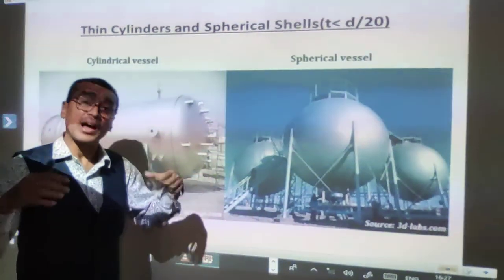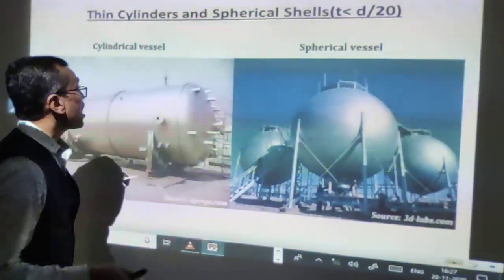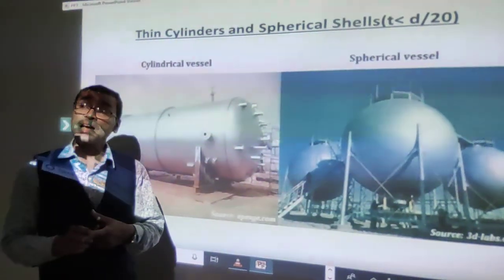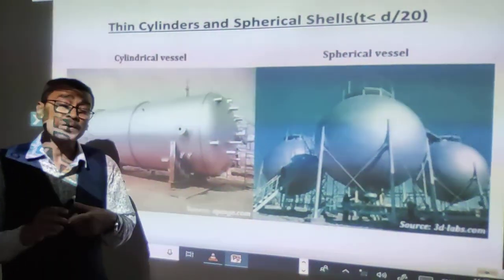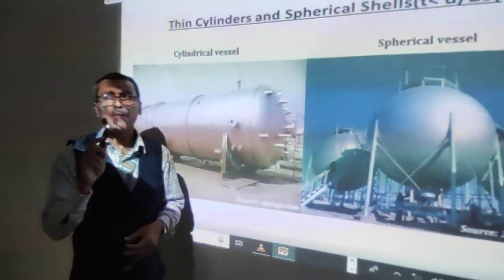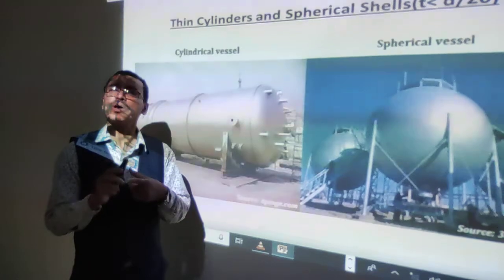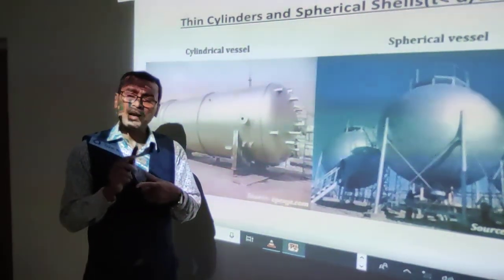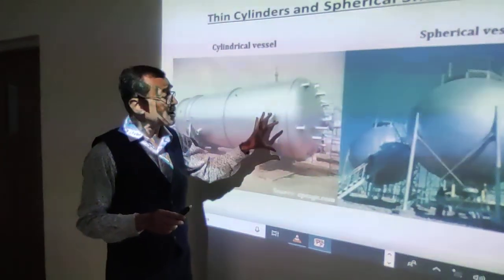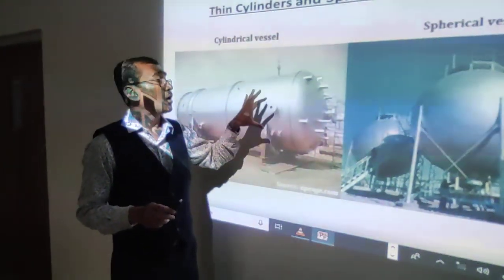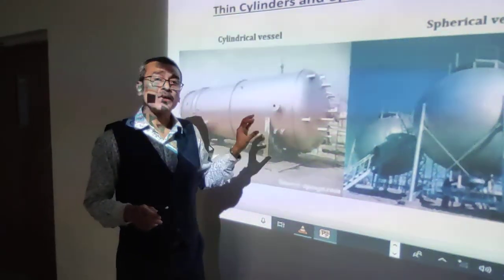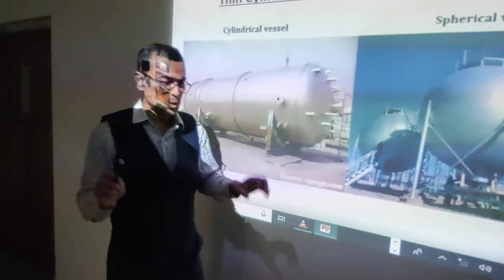In the case of a thin cylinder, the fluid pressure inside must be between 10 atmospheres to 30 atmospheres. One atmosphere is approximately equal to 100 kPa — it is actually 101.325 kPa, but we generally take 100 kPa. So the fluid pressure inside the cylinder is in the range of 10 to 30 atmospheres.